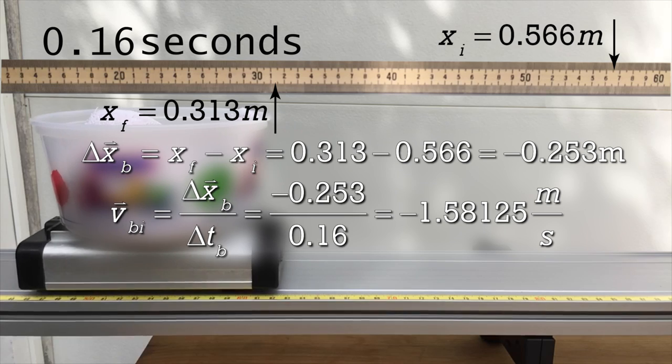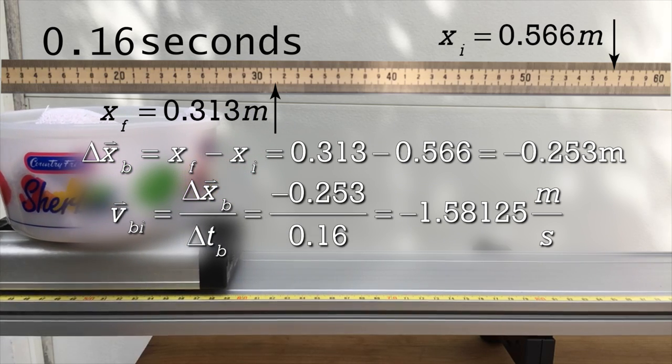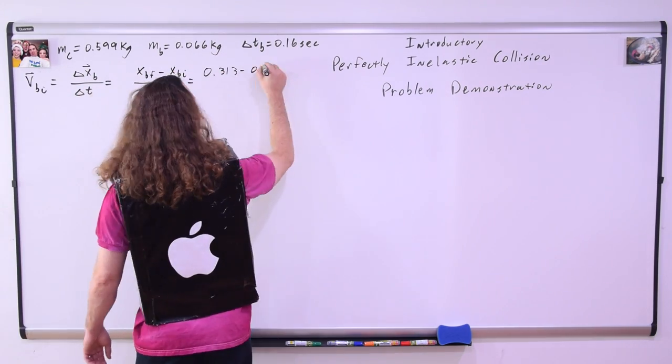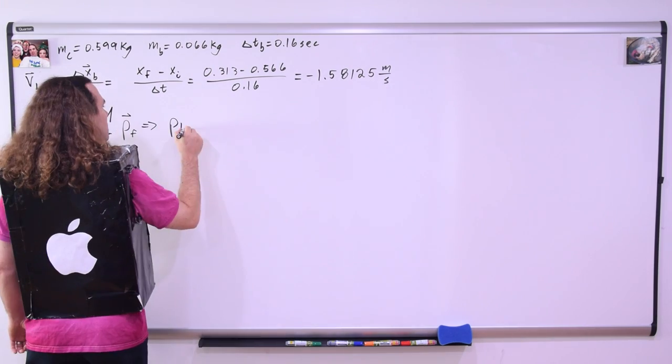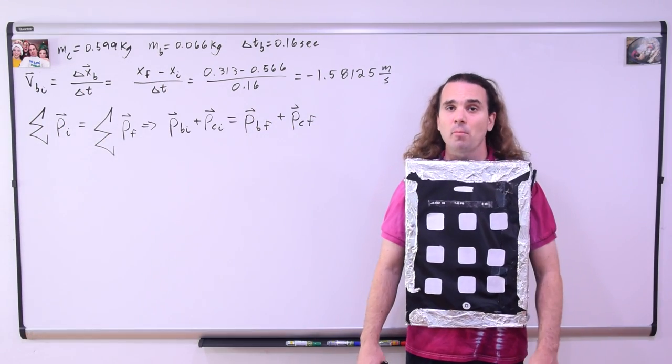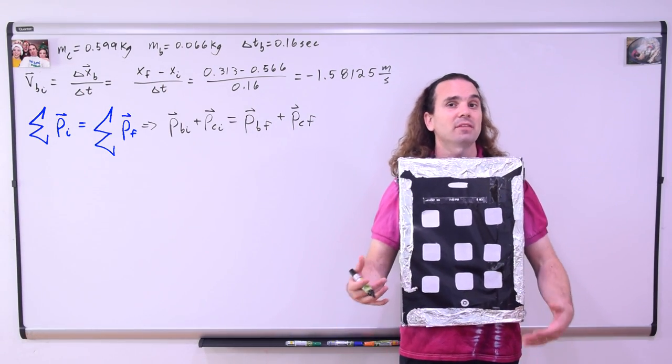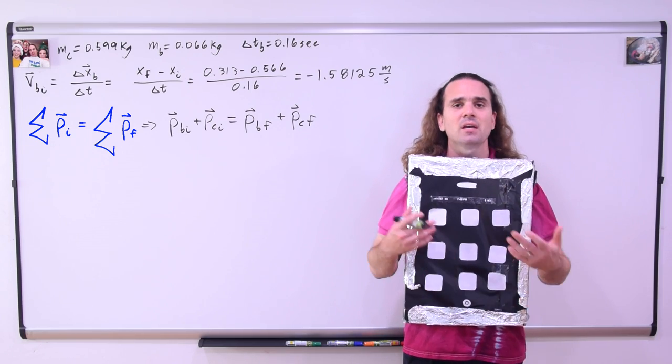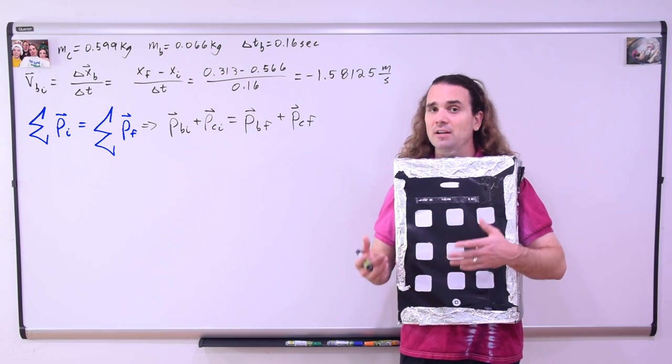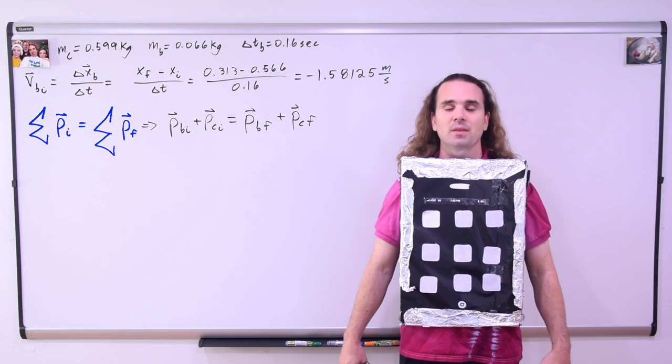Therefore, everything in this problem is in the x direction. Conservation of momentum states that the sum of the initial momenta of the system is equal to the sum of the final momenta of the system. In other words,